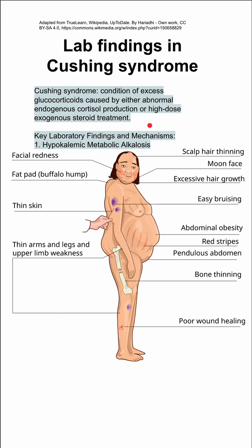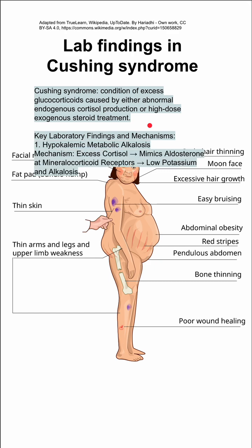Cushing syndrome can cause a hypokalemic metabolic alkalosis. This is because excess cortisol mimics aldosterone at the mineralocorticoid receptor and causes low potassium and alkalosis. Remember, aldosterone causes high sodium, low potassium, and low hydrogen ions, which results in an alkalosis.